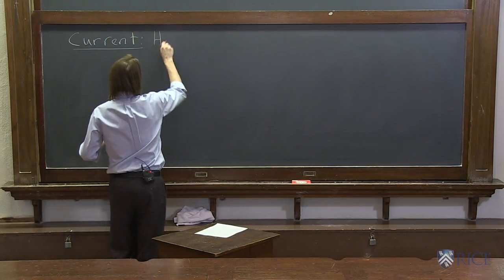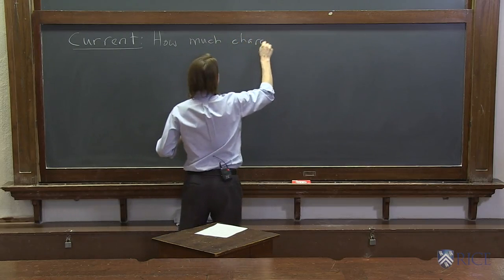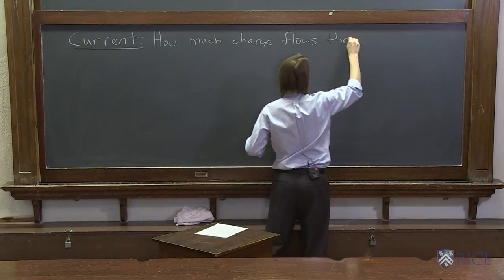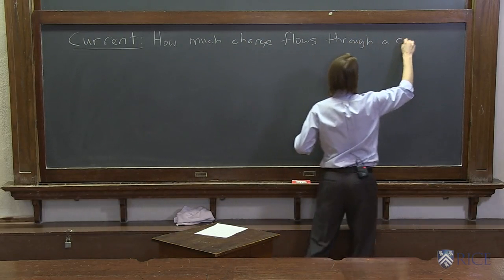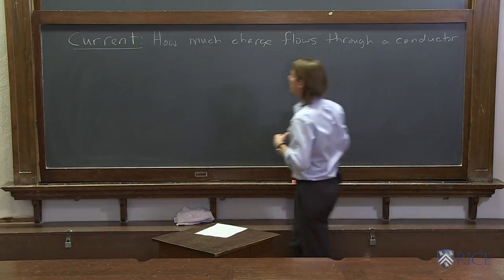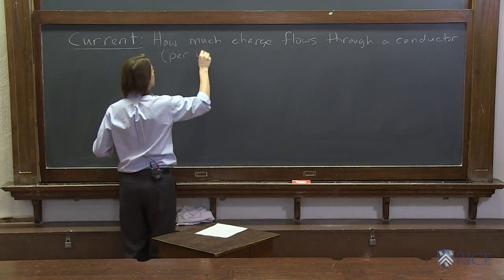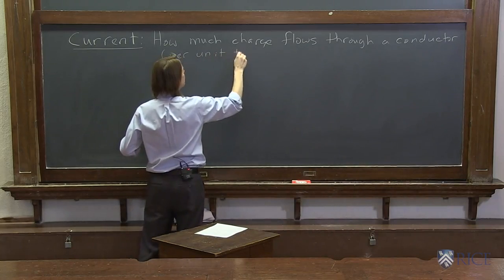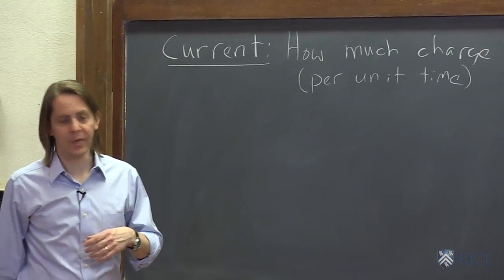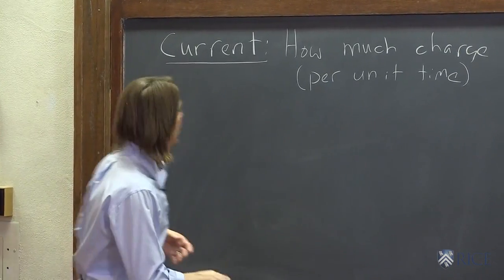Current really is just how much charge flows through a conductor — per unit time. It's really the rate of flow. So how much charge flows per second is what we're trying to think about. So let's draw a conductor then.